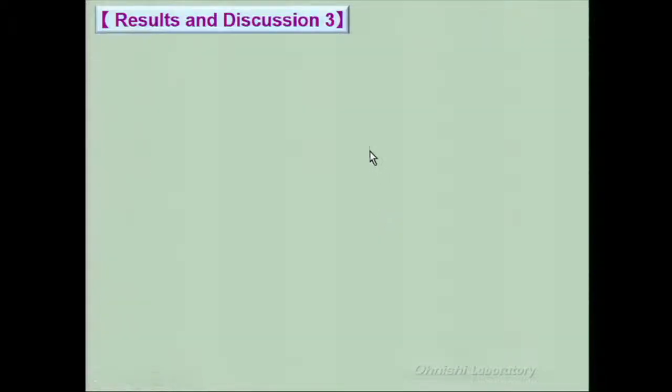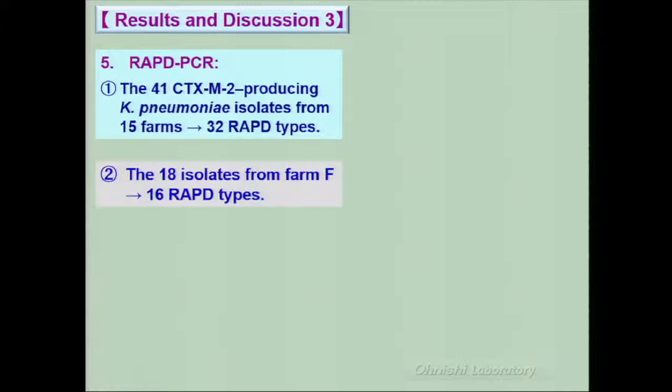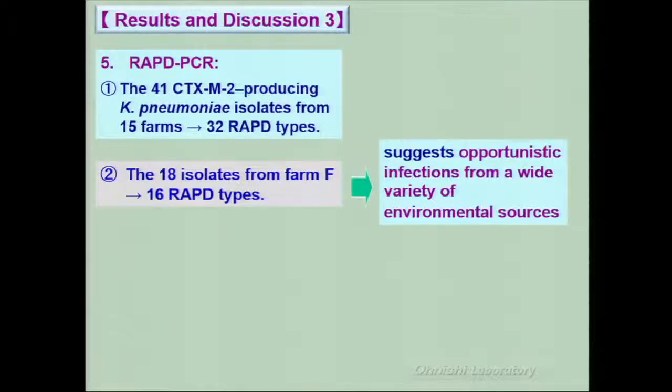Results and Discussion 3: RAPD-PCR. The 41 CTX-M-2 producing K. pneumoniae isolates from 15 farms showed 32 RAPD types. The 18 isolates from farm F showed 16 RAPD types. This suggests opportunistic infections from a wide variety of environmental sources.